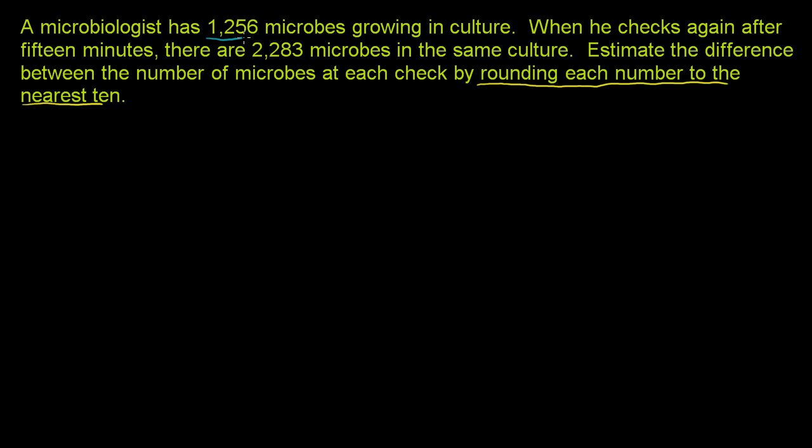We started with 1,256 microbes. How do we round this to the nearest 10? You look at the tens place—the 5 right there. If we round it up, it would go to 6. If we round it down, it would stay at 5. If we round up, this would be 60. If we round down, this will be 50. The rule for rounding is you look at the place one below that.